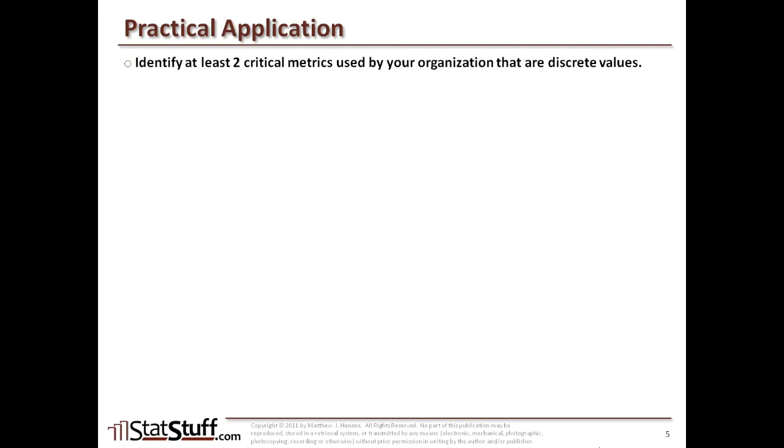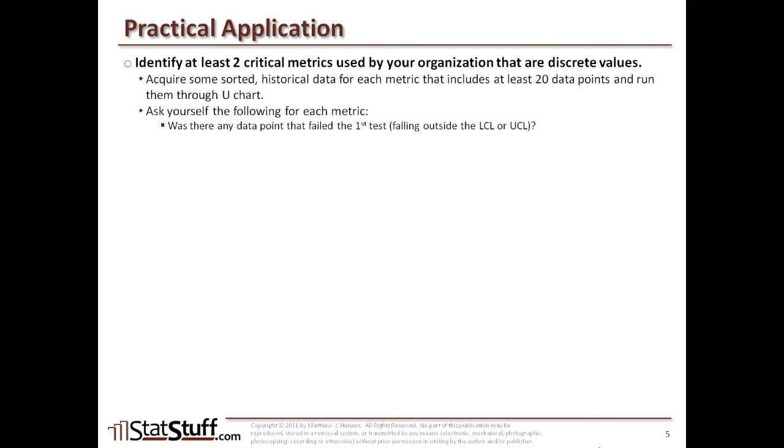Before we close this lesson, let's discuss how we can apply some of these concepts in a practical way. Identify at least two critical metrics that you use in your organization that are based on discrete values, and try to get at least 20 different data points to use for this example, and sort that data from oldest down to most current. Run that through a U-chart. Then ask yourself a few questions. Was there any data point that failed the first test, where the data points fell outside the lower or upper control limits? If so, can you explain what caused that particular failure? Does it appear to be a special cause or a common cause? If any failures were noted, what actions should be taken to help fix it or prevent future failures?